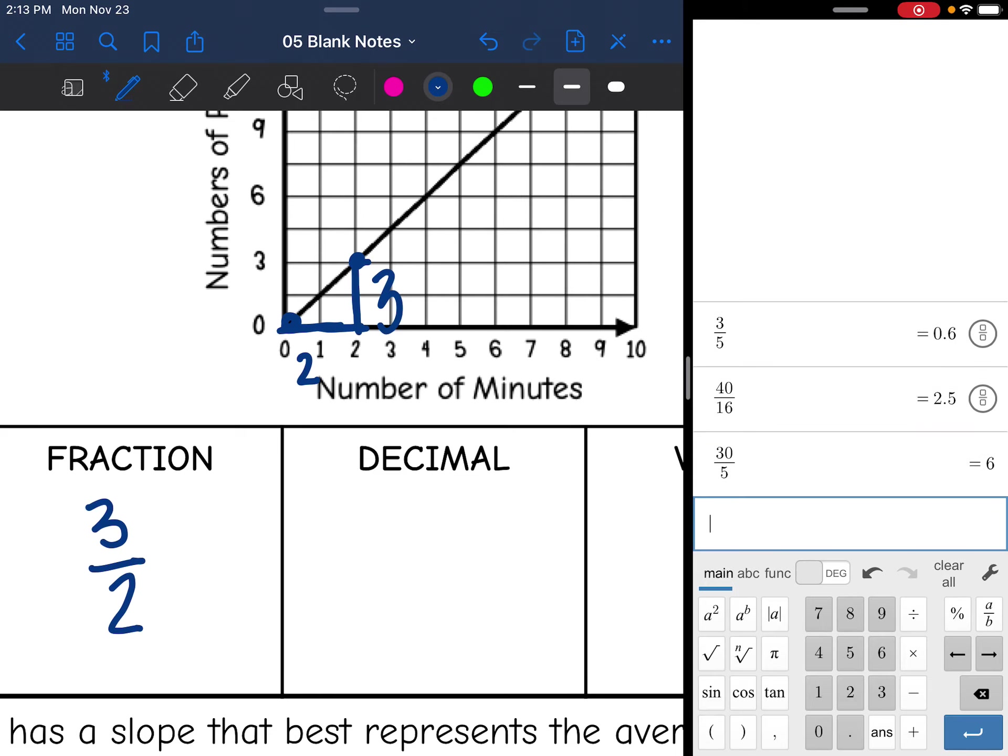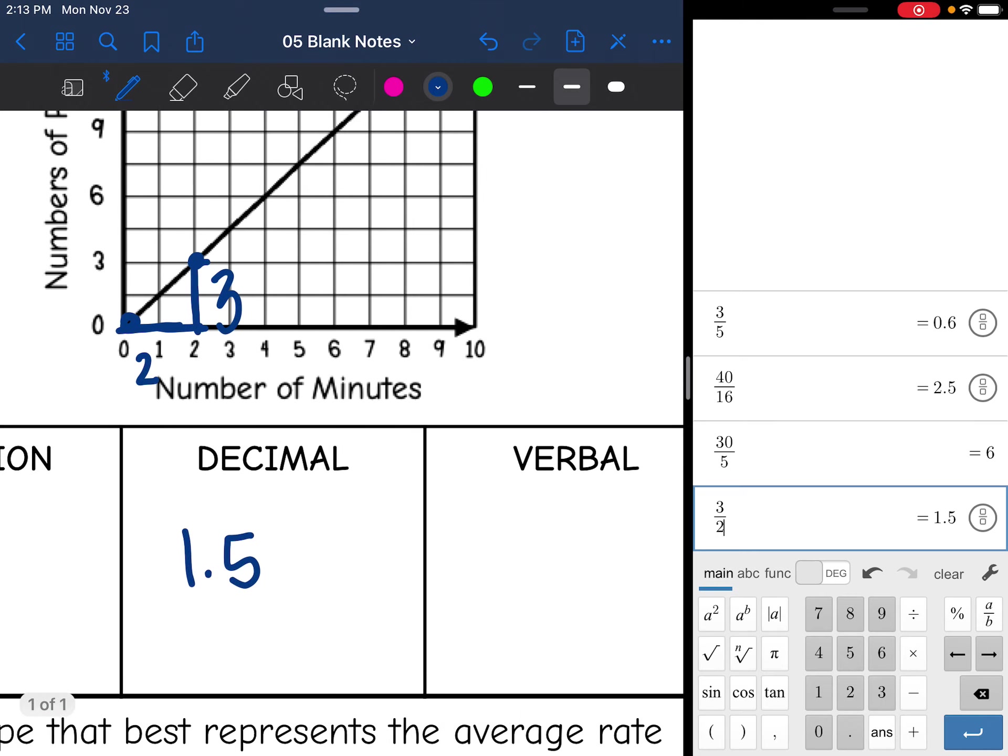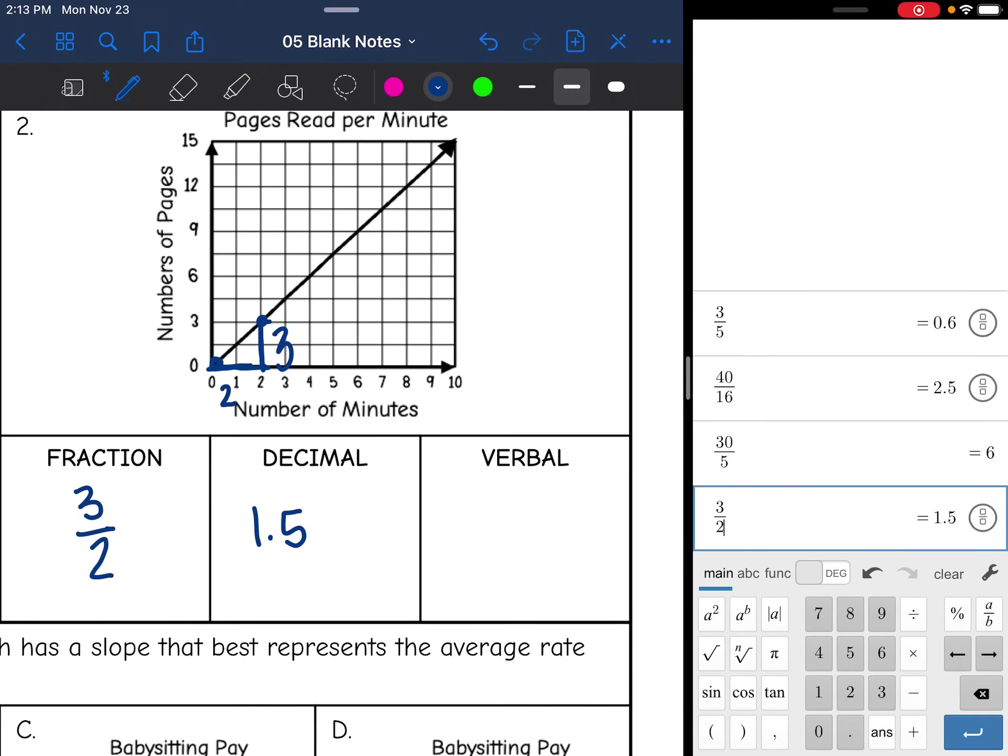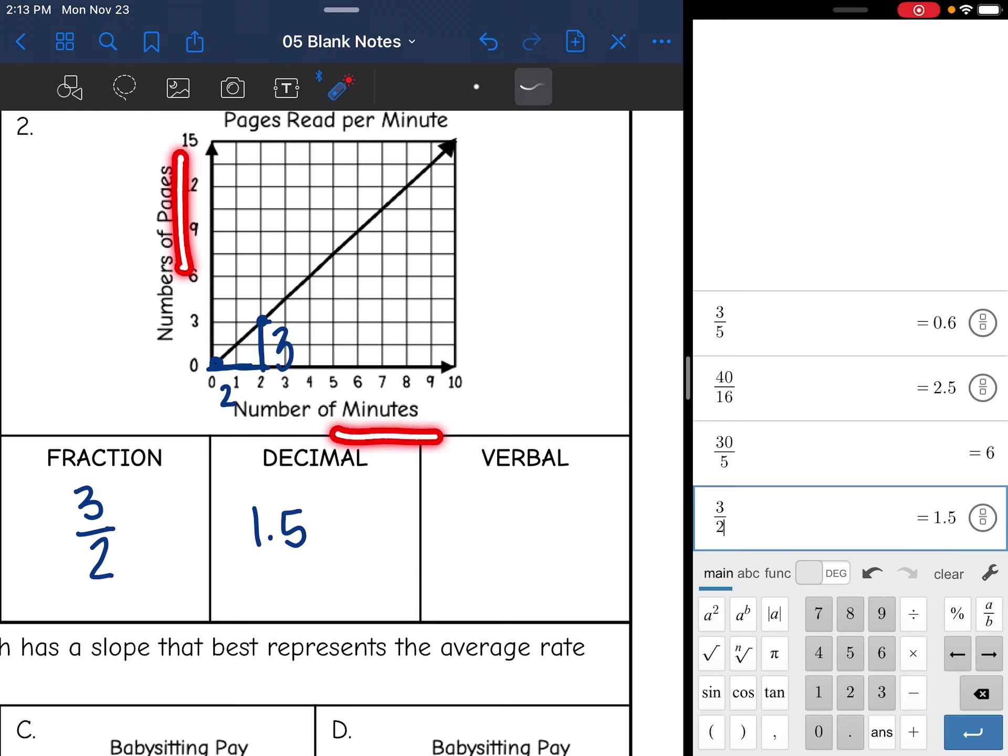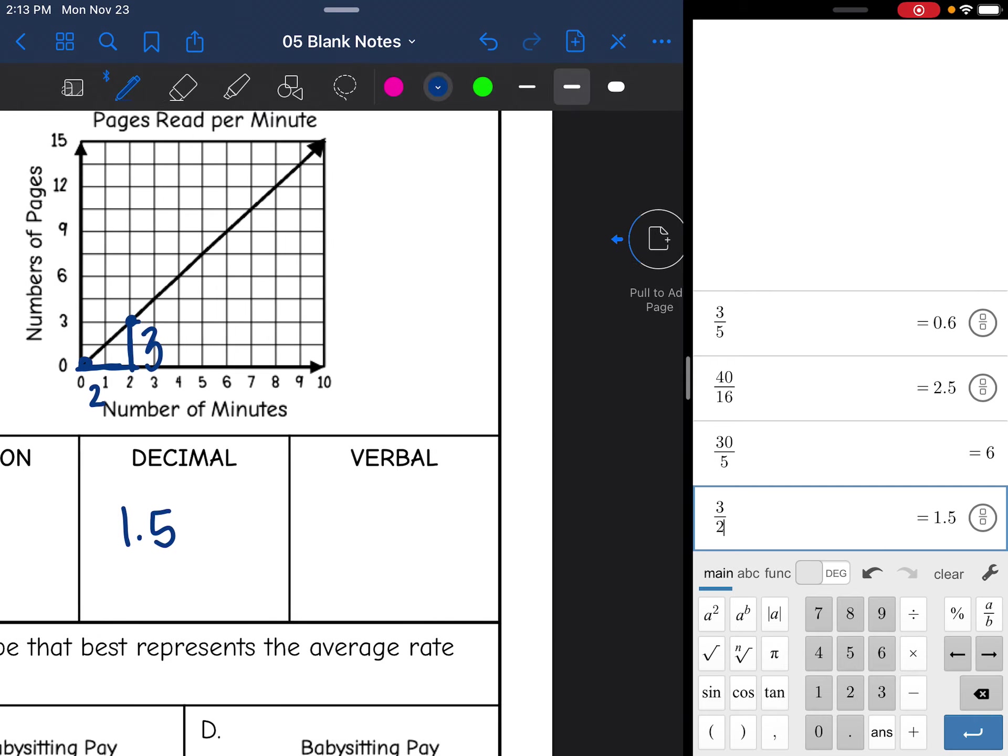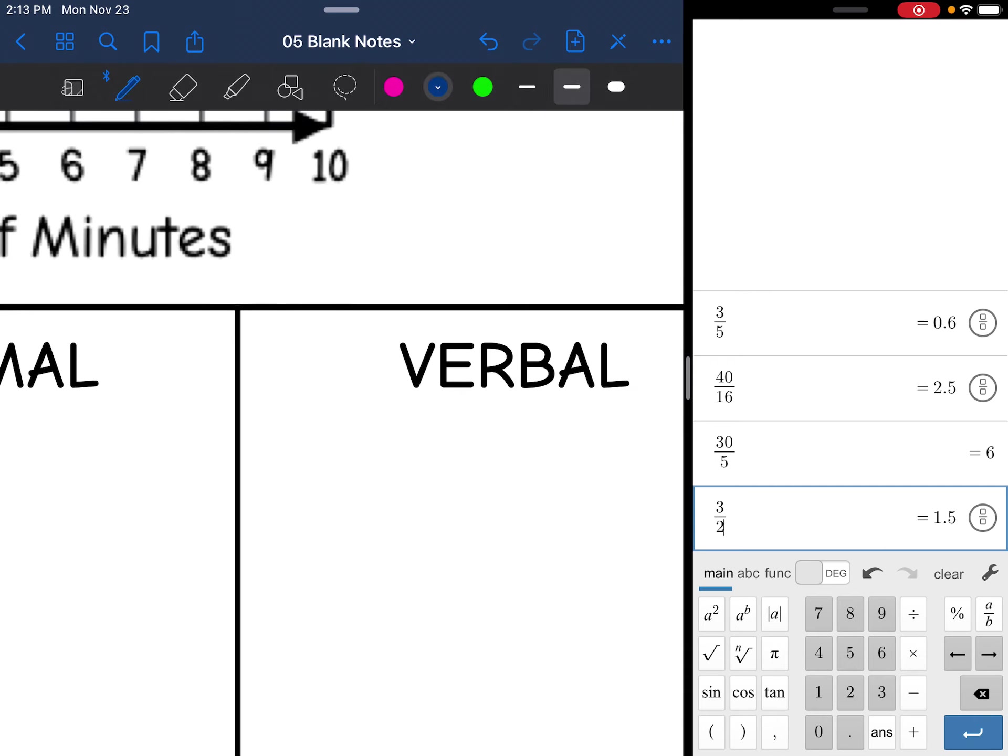And then the decimal, I'm just going to divide that. 3 divided by 2 is 1.5. And what that means is, remember, the y-axis, whatever's on the y-axis versus the x-axis. So it means 1.5 pages per minute. So let's write that for our first verbal description, 1.5 pages per minute.